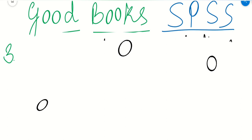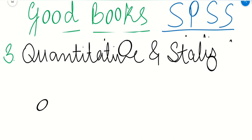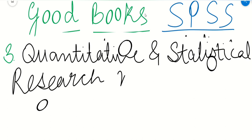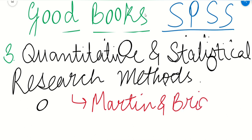The third book is Quantitative and Statistical Research Methods, and the author for this book is Martin and Britmon.